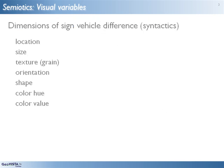Bertin identified seven dimensions of sign vehicle difference that a cartographic or information designer can manipulate to signify data. In semiotics, the study of these dimensions falls under the topic of sign syntactics.